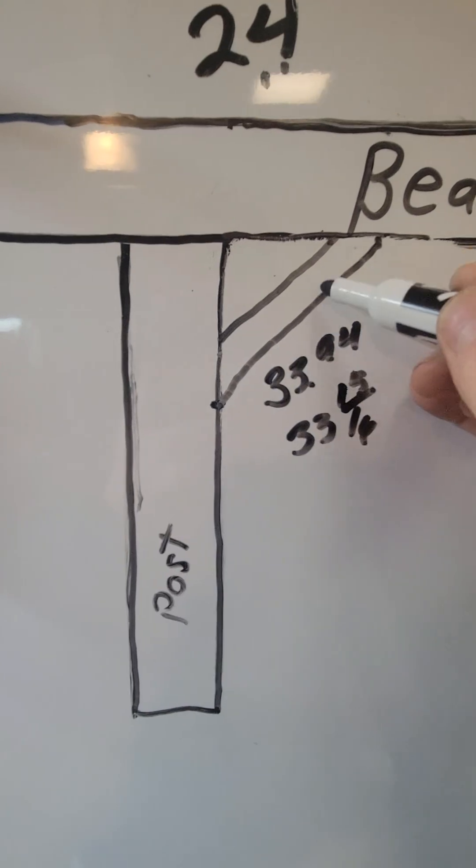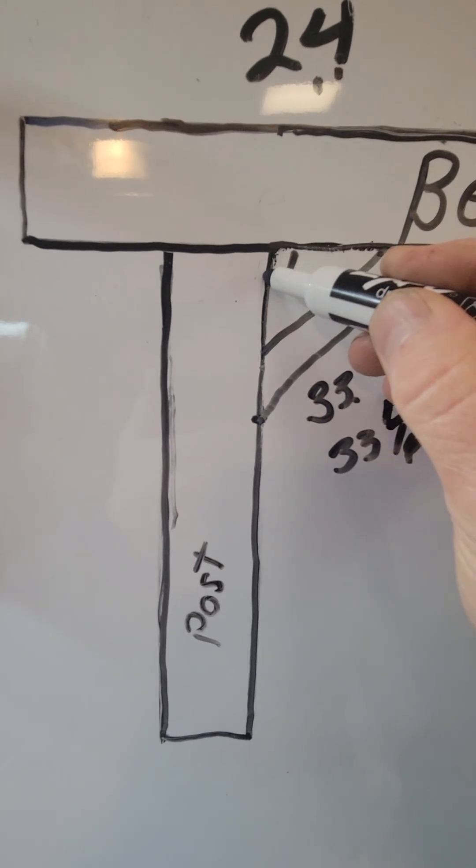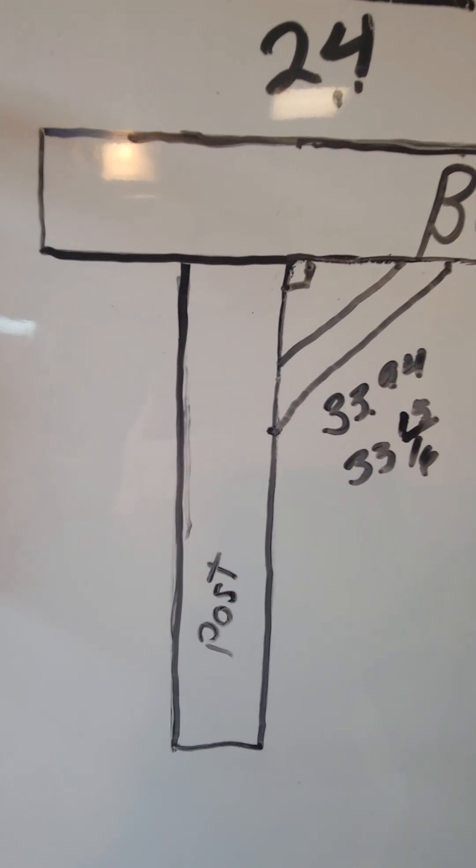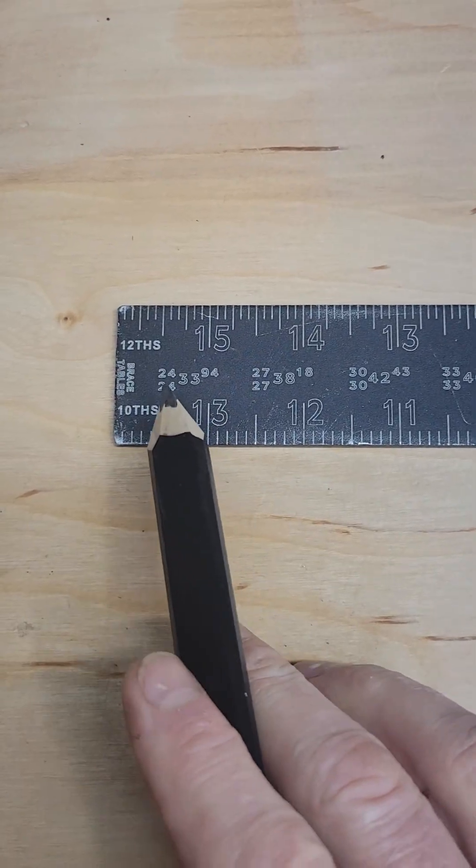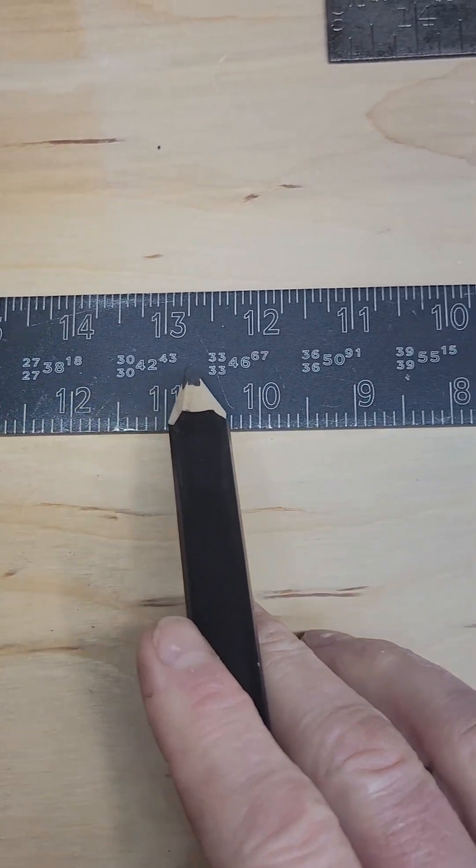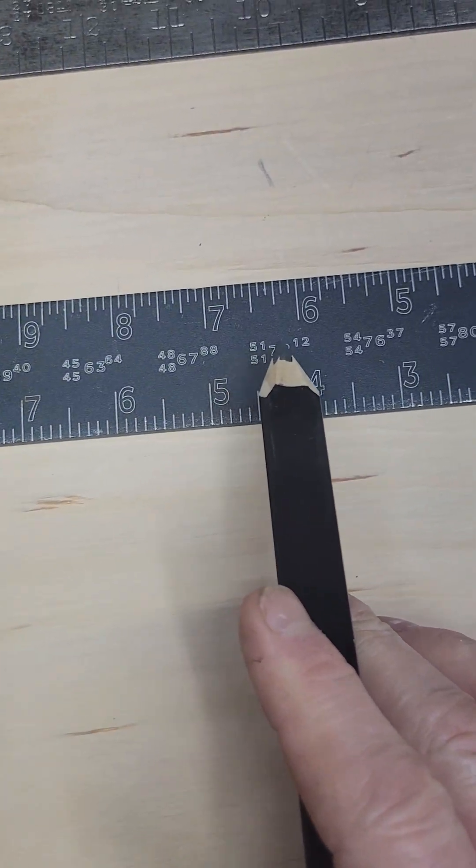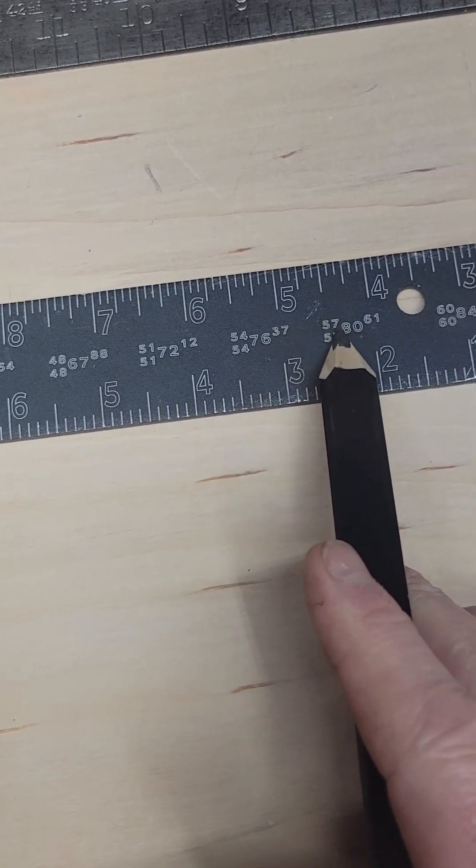You've got two 45-degree cuts here and you've got a 90-degree right here. And that's what the post and beam work is for right here on your brace table scale.